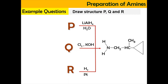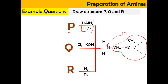Now let's do example equations with structures P, Q, and R that produce a given amine product. The product is a primary amine because nitrogen is attached with one large alkyl group. For P: the reagent is lithium aluminium hydride with H2O — this tells us it's a reduction of amide. Since the product is a primary amine, the reactant P must be a primary amide.